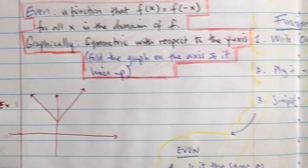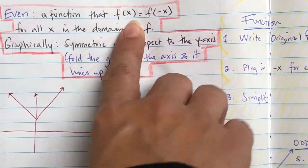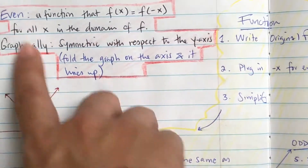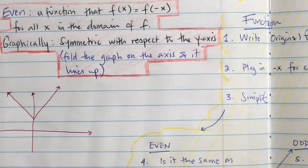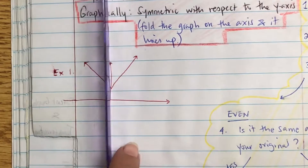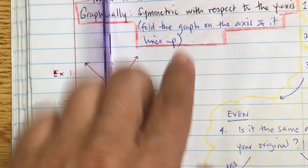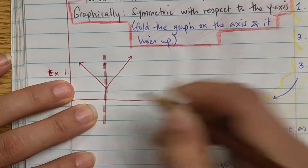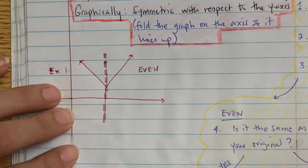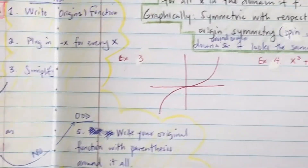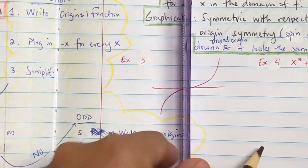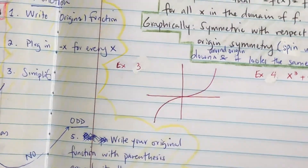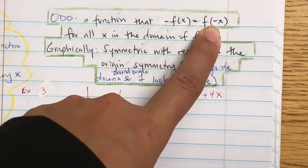What is an even function? It's a function where f(x) is equal to f(-x). Graphically, it's symmetric with respect to the y-axis. If I fold it over the y-axis, is it the same? Yes — so that's an even function. Let's look at another graph: if I fold it over the y-axis, does it look the same? No, because the top part shifts, so that's not even.